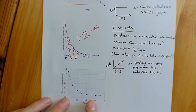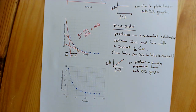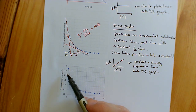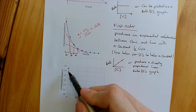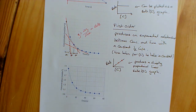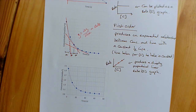Moving on to the third graph, which is second order. You'll notice the half-life is not constant in this one — it doesn't take the same amount of time for the concentration to halve each time. That's an indicator it's not first order, but the only way to prove it's second order is to plot a rate-concentration graph.